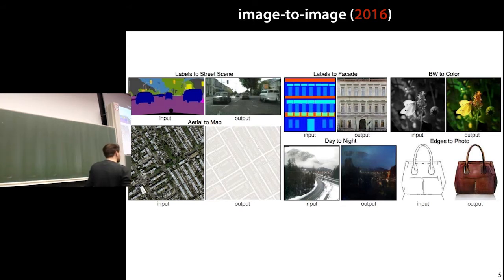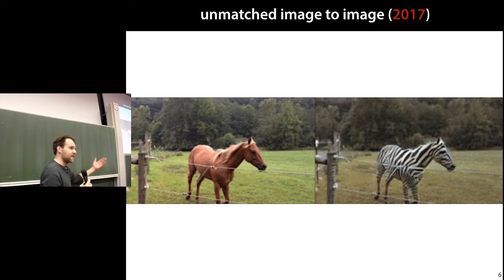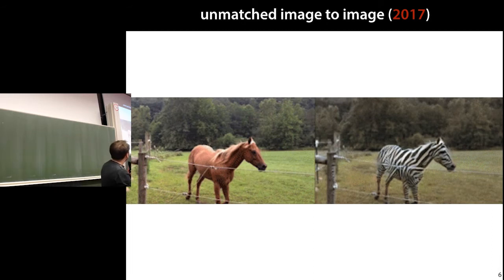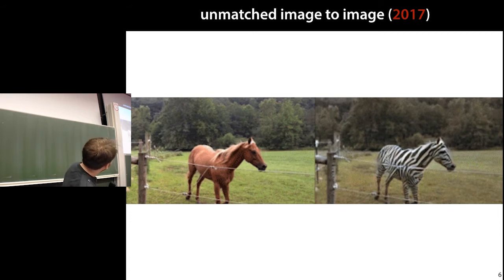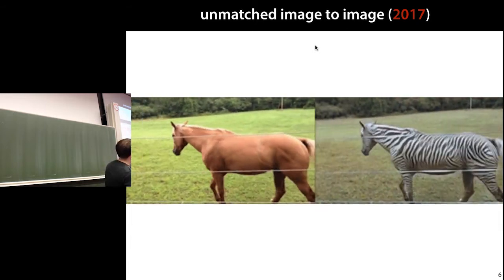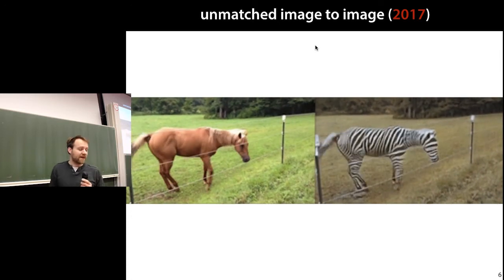But these are all matched images. The same authors asked: what if you have images that are not matched? For instance, if you want to translate a horse into a zebra, we don't have matched image pairs. What we do have is a large bag of images of horses and a large bag of images of zebras, without one-to-one correspondence. In 2017, they figured out a way to do that successfully. And the nice thing is, if you do it on all frames of a video and play it back, it still looks pretty realistic — considering it's trained just on unmatched bags of images.